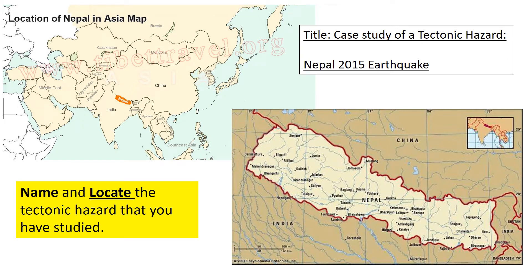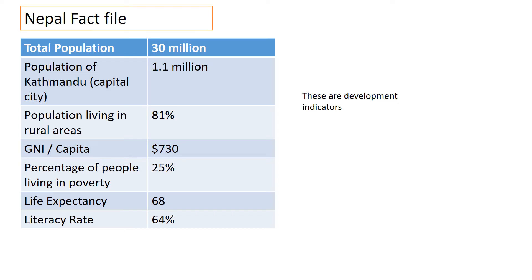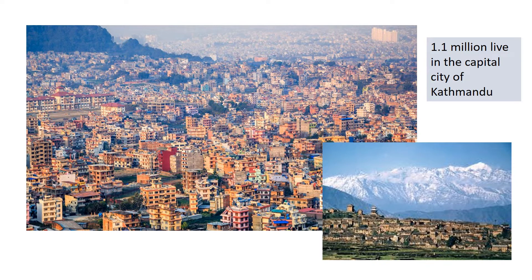For the global hazards topic you need to know about a case study of a tectonic hazard. The tectonic hazard we studied was the Nepal earthquake that took place in 2015. Nepal is a country located between India and China, with a population of around 30 million. The majority of those people are very poor — most earn around 730 dollars in an entire year — leading to a life expectancy of just 68. The capital city of Nepal is called Kathmandu.